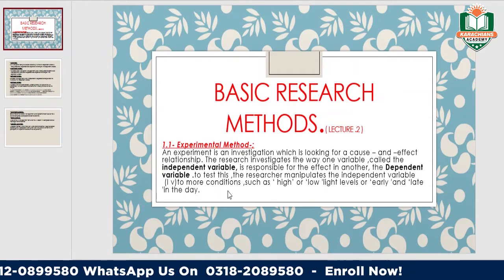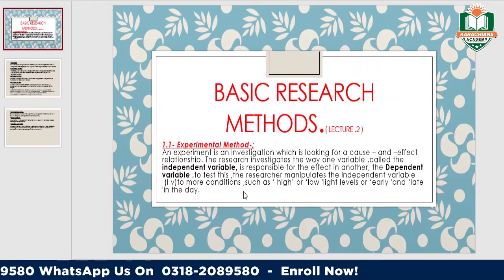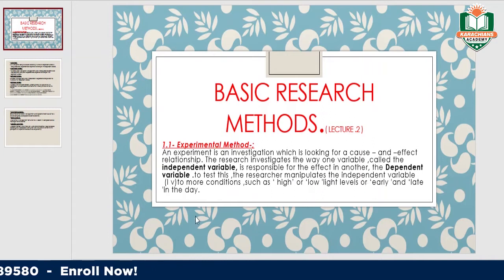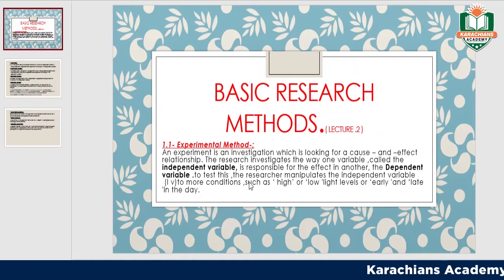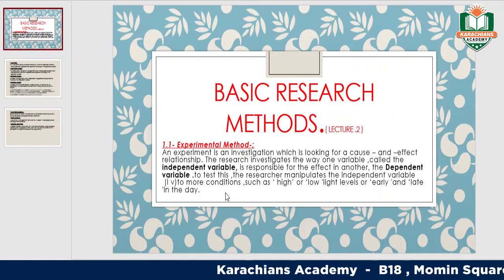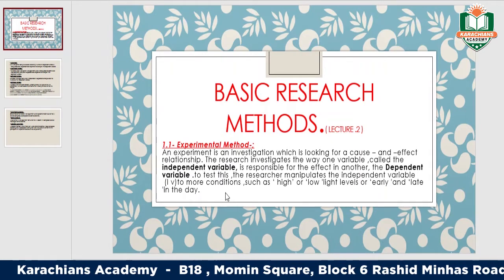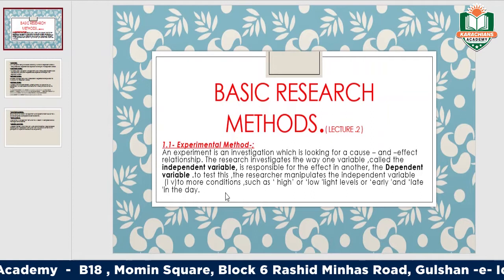To test this, the researcher manipulates the independent variable to create more conditions, such as high or low light level, or early and late in the day. In the experimental method, we arrange an experiment and study our hypothesis.